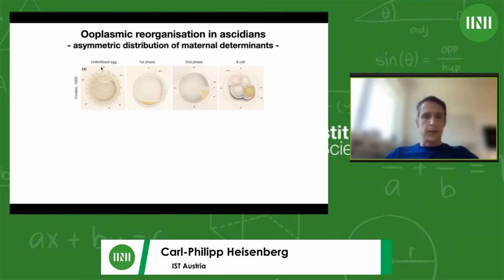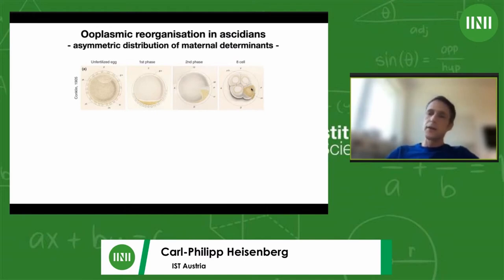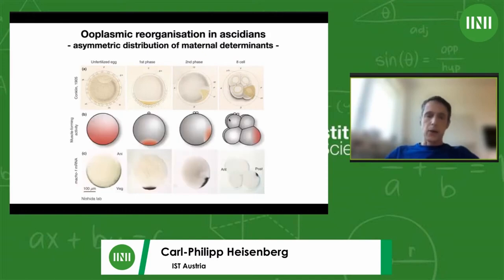This was first recognized by Conklin more than 100 years ago in ascidian embryos. What he identified is a structure he called the myoplasm, which becomes obvious because it has a yellow color. He found that the myoplasm — a mitochondria-rich structure — accumulates at the vegetal pole of oocytes and then segregates into different blastomeres. These blastomeres give rise to specific tissues, so he could really correlate the segregation of a specific structure within the oocyte to a specific cell fate and the organ later formed.